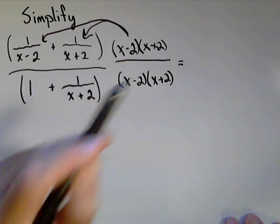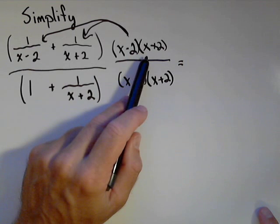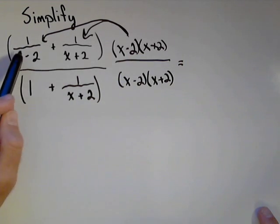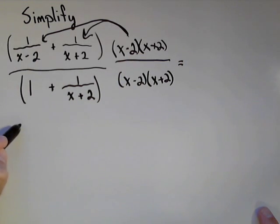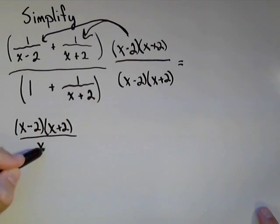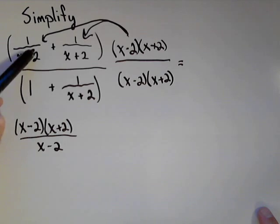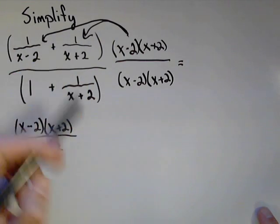So in the numerator, when I do my multiplication, first off, I'm gonna have x minus 2 times x plus 2 times this one. So, x minus 2 times x plus 2 over x minus 2. So that's distributing to this first term. Now we're gonna distribute it to this second term.